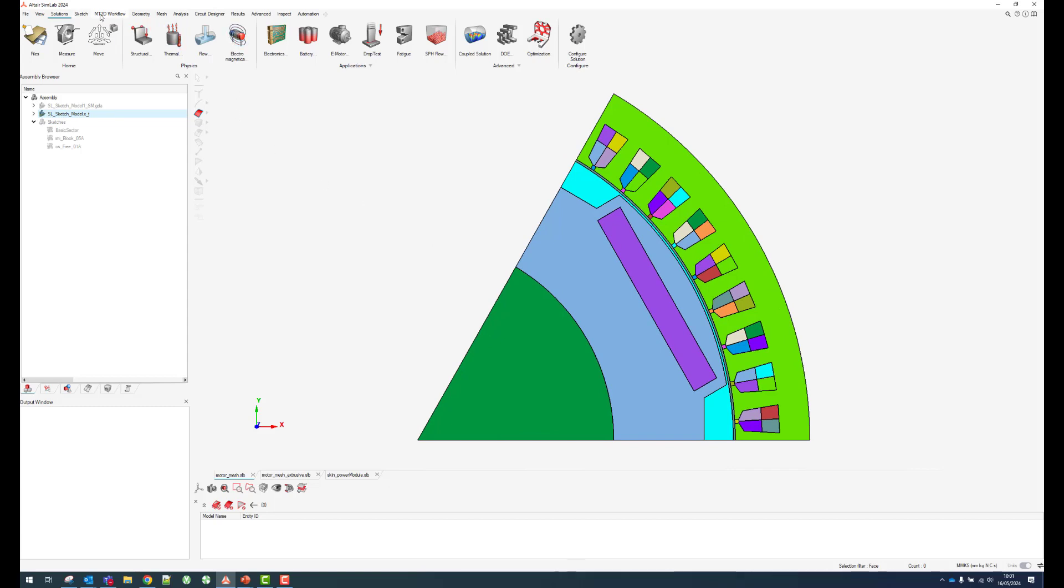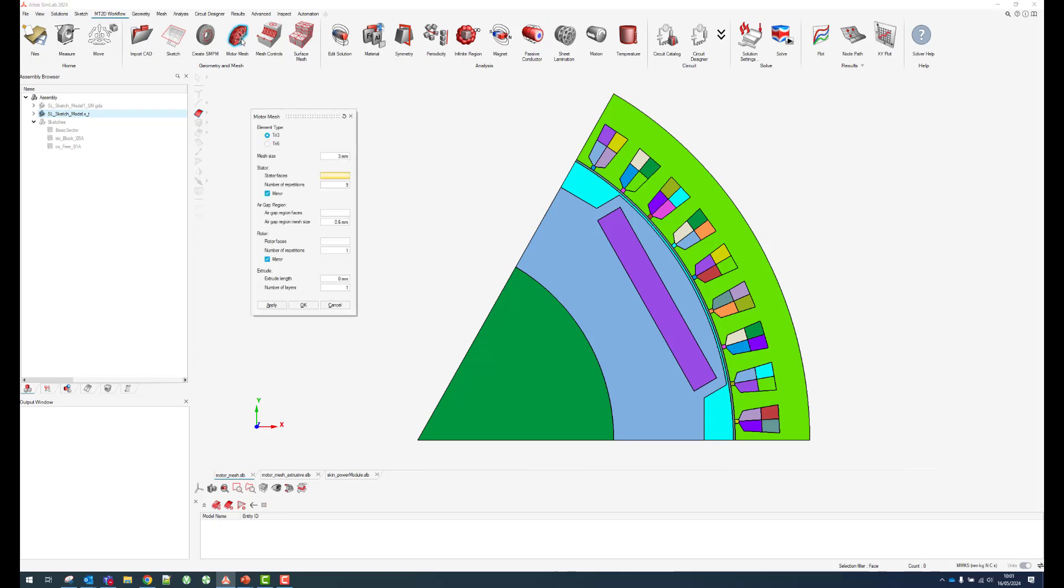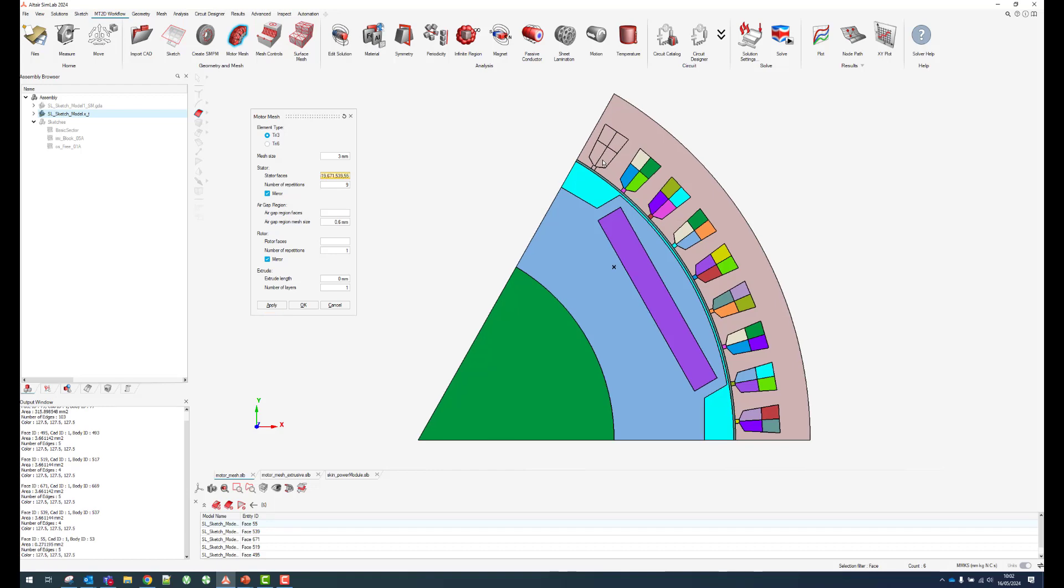Let's go in our magnetic 2D workflow and we have the motor mesh here. I can select the type of elements, the mesh size, approximately stator faces. Let's click on these faces and you can do right click, select identical faces, so it's selecting all the same slot faces. We have nine slots here, so nine repetition mirror to make it periodic. Air gap region, you can select the two faces here and there's a mesh size.